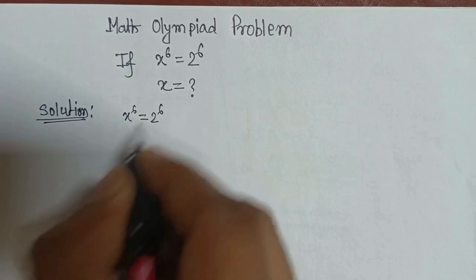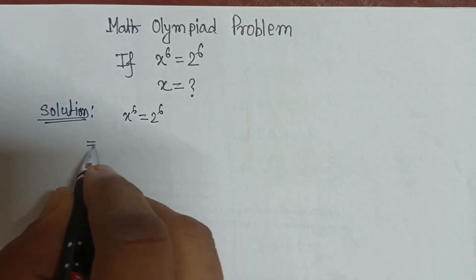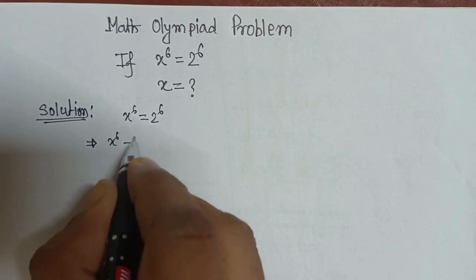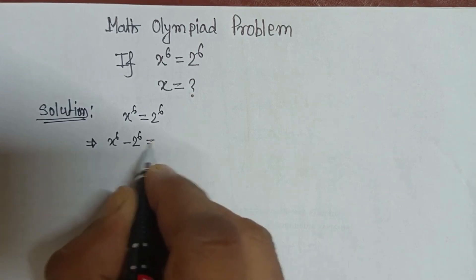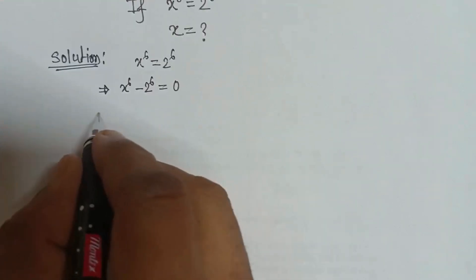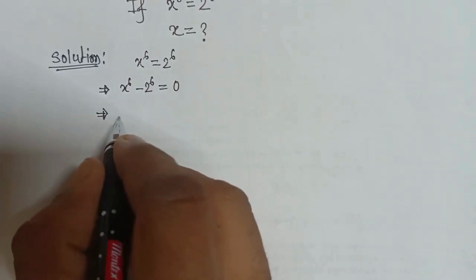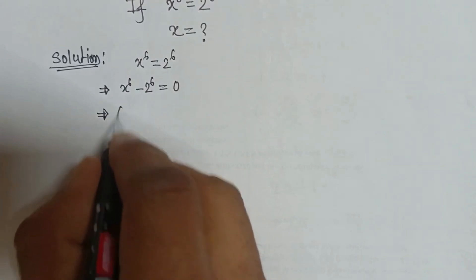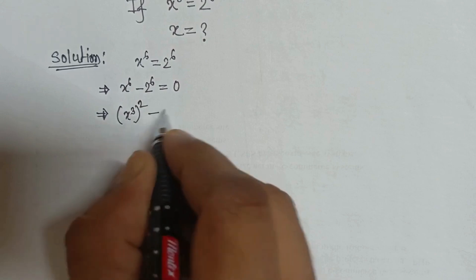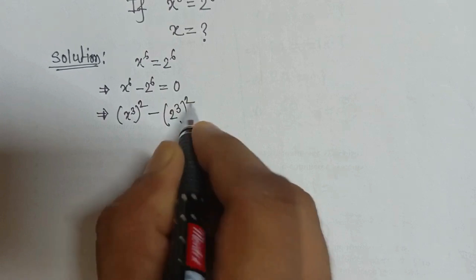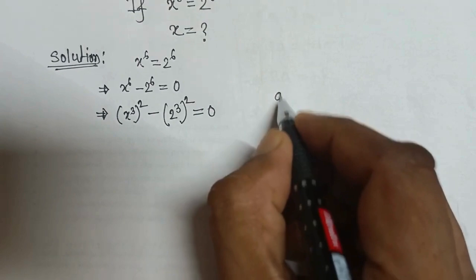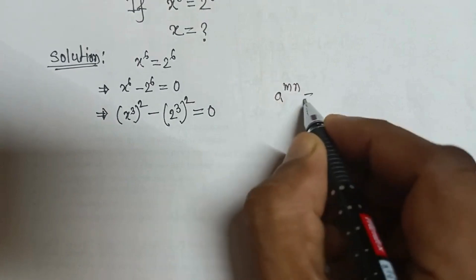We move 2 to the power 6 to the left side, giving us x to the power 6 minus 2 to the power 6 is equal to 0. We can express the equation like x cubed squared minus 2 cubed squared equals 0.